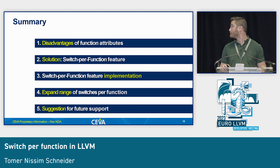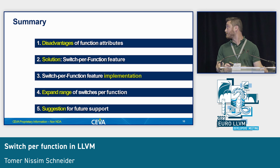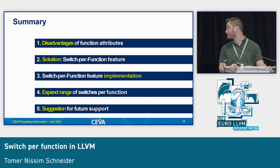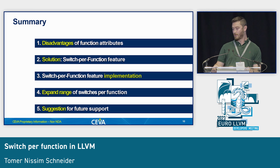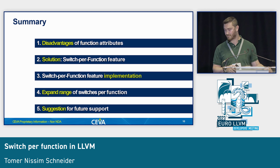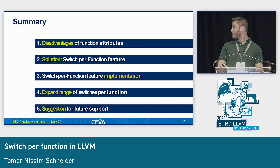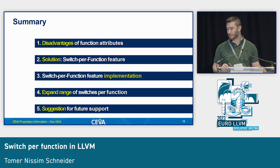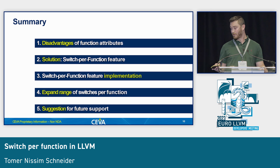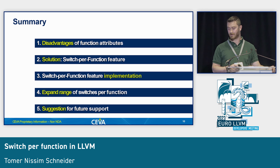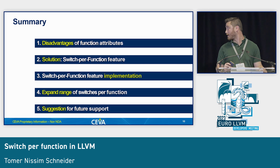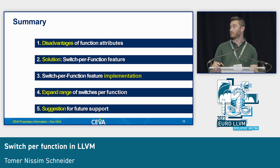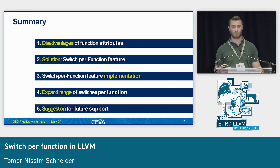In summary, I talked about the disadvantages of the function attribute approach, which forces you to modify the source code. I suggested a solution using switch-per-function to handle this problem. I showed the switch-per-function implementation we did at SIVA, how we expanded the range of switches the feature supports, and how we can further expand support of this feature to make it easier to maintain. Thank you very much for your time.